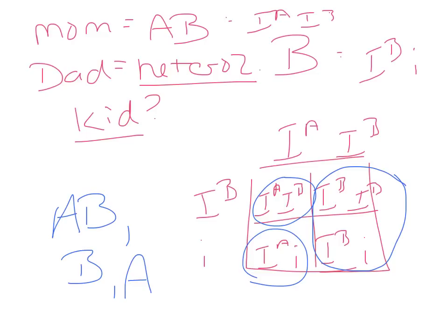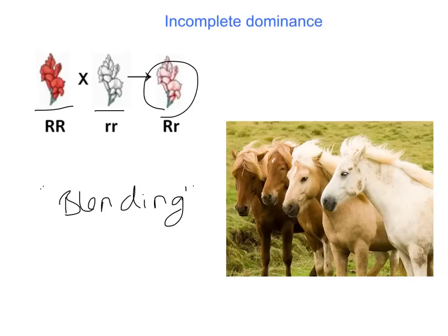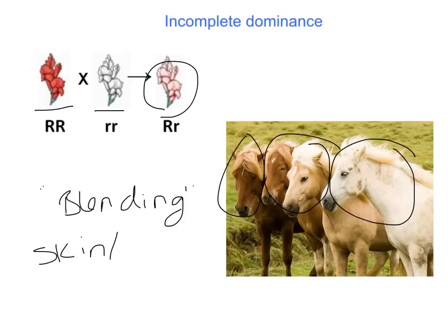Now let's look at incomplete dominance. Incomplete dominance is usually best seen with coloring — we can almost consider it a blending. In co-dominance, both alleles are fully expressed, like A and B surface markers or spots on a cow showing brown and white pigment. With incomplete dominance, you get what looks like a blending of the two traits — for instance, red and white producing pink flowers, or horse colors ranging from cream to dark brown with varieties in between. Incomplete dominance is commonly seen in skin and hair colorings. Stripes and spots are co-dominance; varying shades of color are incomplete dominance.